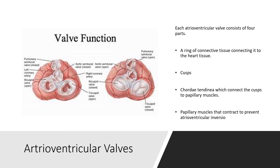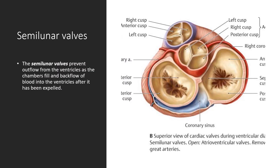The atrioventricular valves include the tricuspid valve, which separates the right atrium from the right ventricle and is composed of anterior, posterior, and septal cusps. The bicuspid valve separates the left atrium from the left ventricle and is composed of anterior and posterior cusps. The anterior cusp is immediately adjacent to and continuous with the wall of the aorta. The cusps prevent outflow from the ventricles as the chambers fill and backflow of blood into the ventricles after it has been expelled.